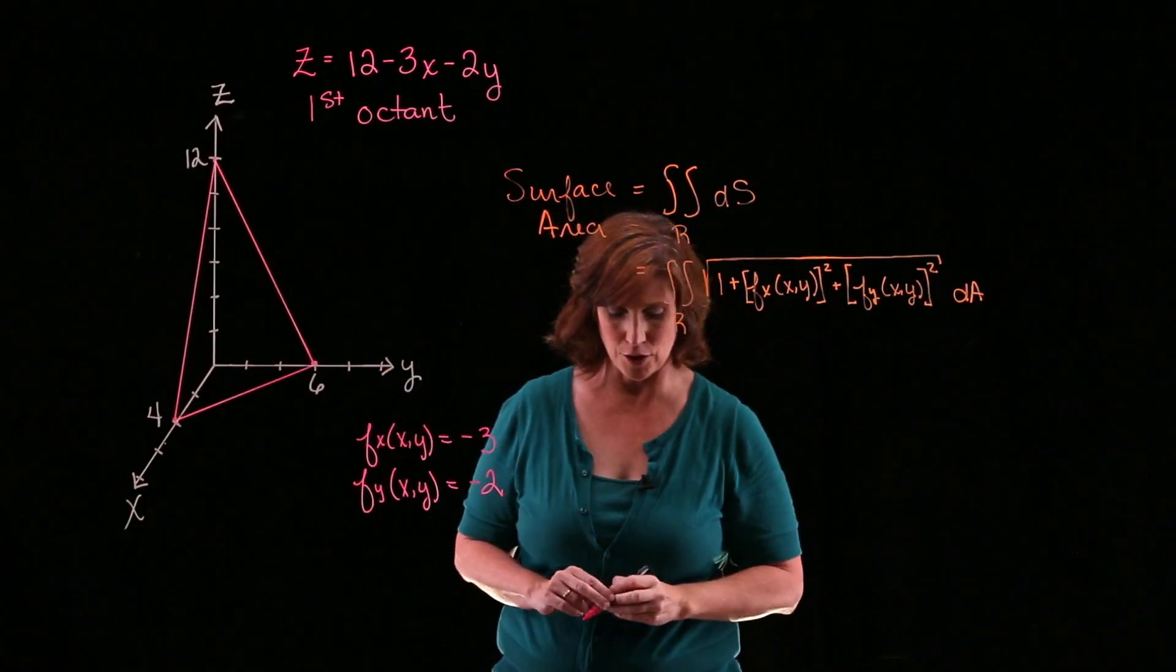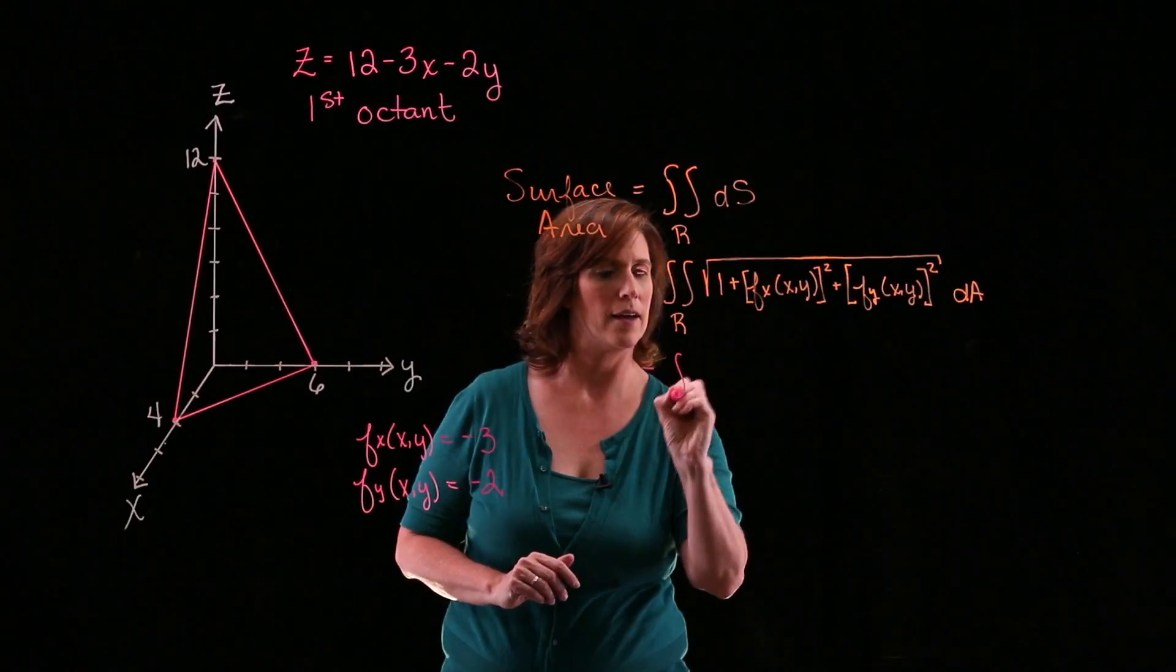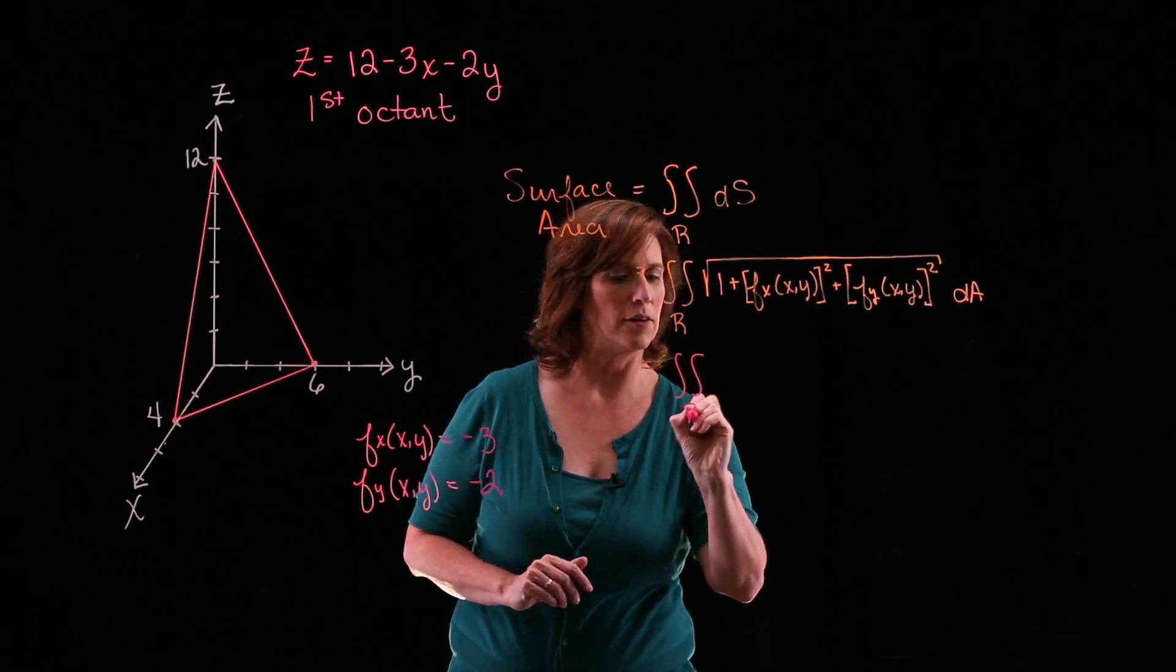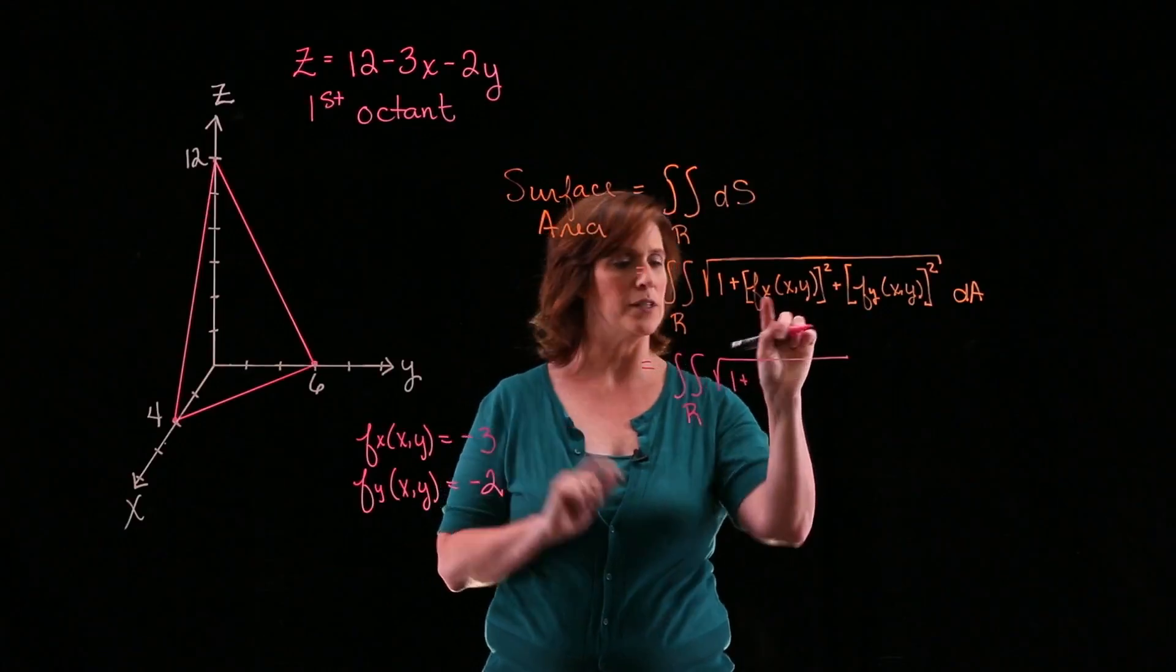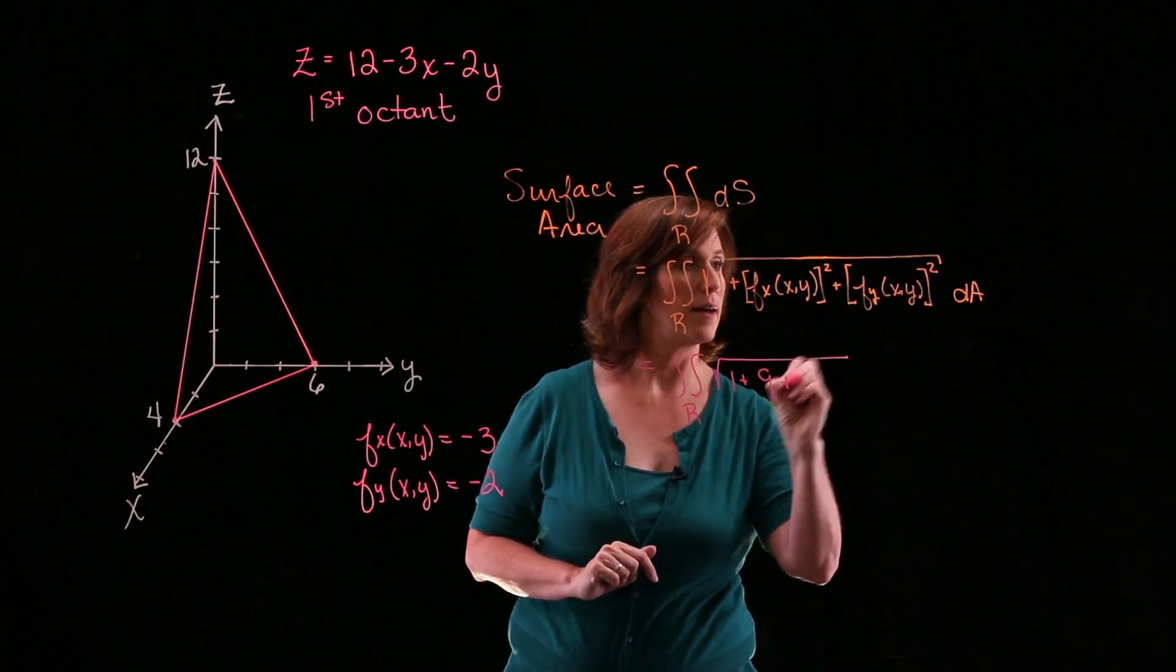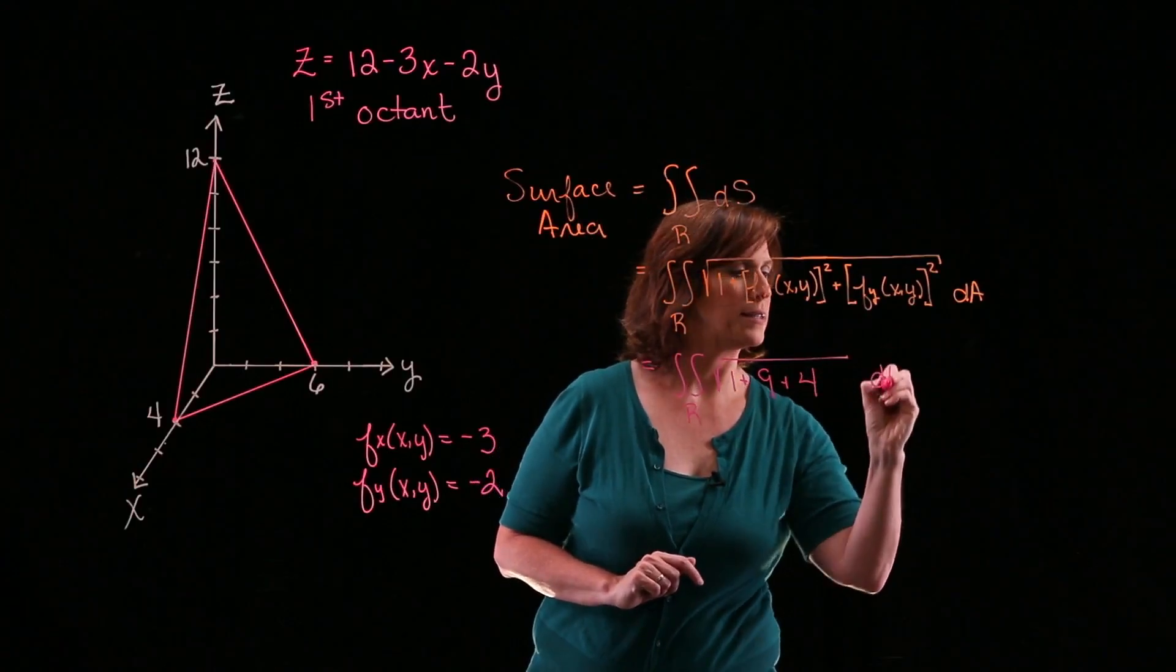So let's go ahead and plug that into my problem. So I'm going to have the double integral of the square root of 1 plus negative 3 squared, which is 9, plus negative 2 squared, which is 4 dA.